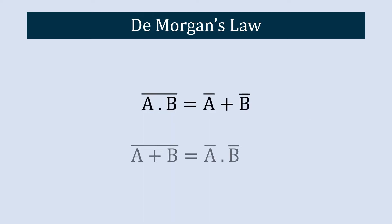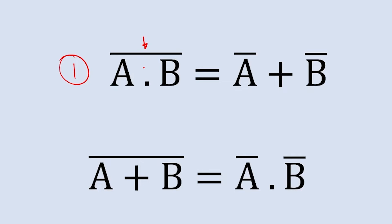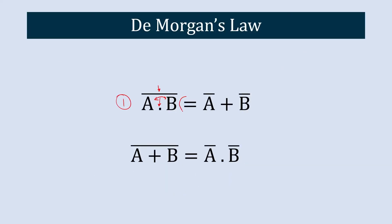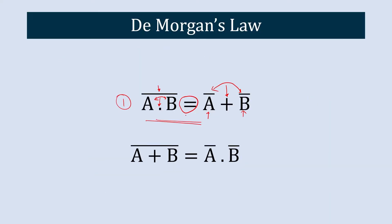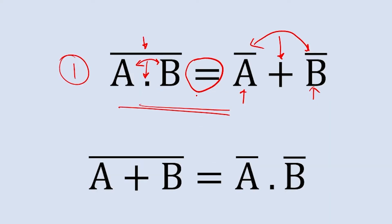These are the two laws of De Morgan's theorem. The first law states that the complement of an AND operation between two variables is equal to the OR operation between the complements of the two variables.